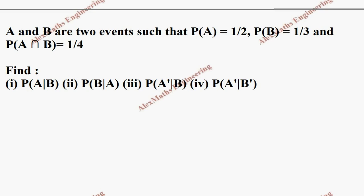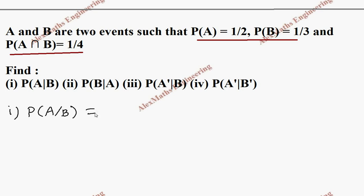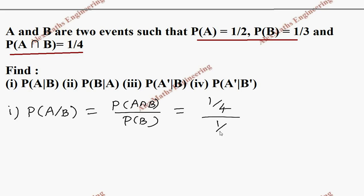In the next problem, they have given P(A), P(B), and P(A∩B). In the first subdivision, they want P(A|B). Using P(A|B) = P(A∩B) / P(B) = (1/4) / (1/3) = (1/4) × (3/1) = 3/4.